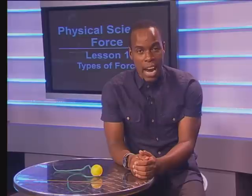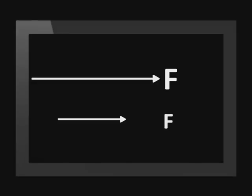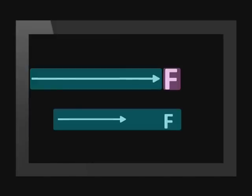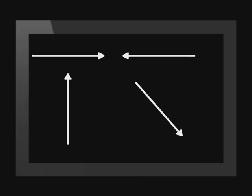A vector is an arrow. The length of the arrow represents the magnitude of the vector quantity — a longer arrow represents a stronger force than a shorter arrow. And the orientation of the line and direction of the arrowhead represent the direction of the vector quantity.